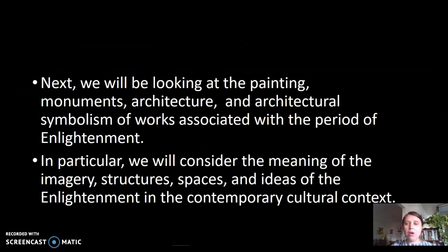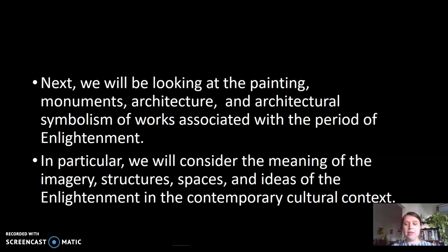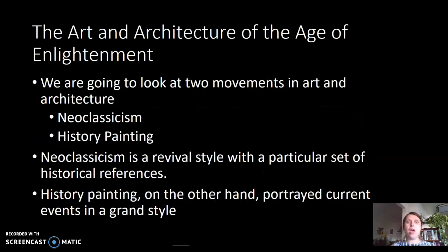So we have a sense of the visual world of these thinkers. Enlightenment thinkers also invented new architectural and painterly styles to reflect their new worldview. We're going to see what did these folks surround themselves with, and what does it tell us about how those aligned with the French Revolution, the American Revolution, and Enlightenment thought saw themselves. What does the architecture, the monuments, and the paintings that they surrounded themselves with tell us about how they saw themselves? We're talking about two movements: neoclassicism and history painting.